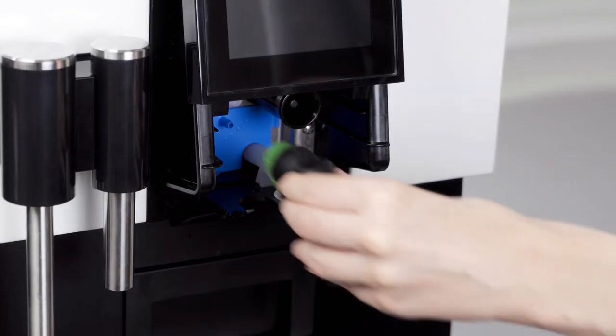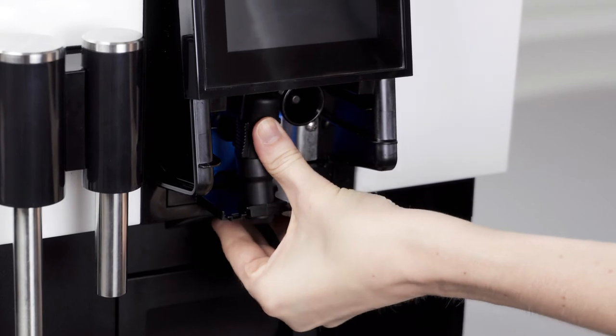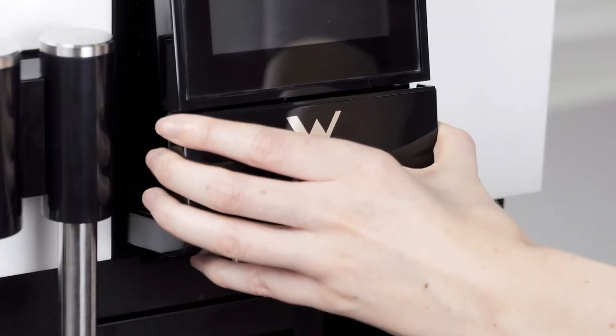Reattach the milk foamer to the milk nozzle. Next, place the milk foamer back in the machine and reattach the cover with the coffee spout to the machine.